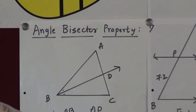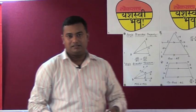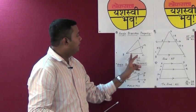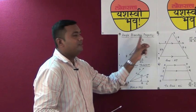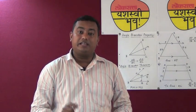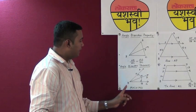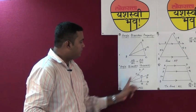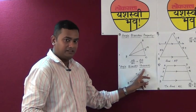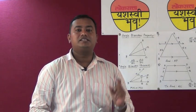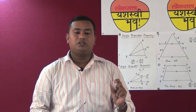Another mistake: changing a small word like 'property' to 'theorem' can cause errors. The angle bisector property in standard 10 states that in a triangle, the angle bisector divides the opposite side in the ratio of the remaining two sides. The angle bisector theorem from standard 9 says that if point M lies on the bisector of angle ABC, then M is equidistant from the sides of angle ABC, giving MN equal to MO. These are different — do not confuse them. If you mean the standard 10 result, write 'angle bisector property'; if you mean the standard 9 result, write 'angle bisector theorem.'